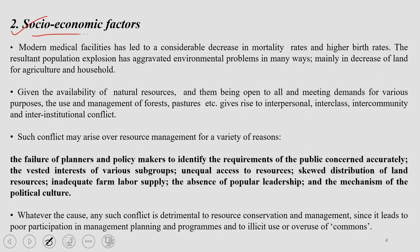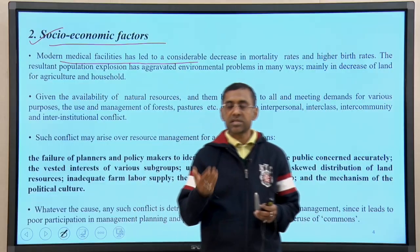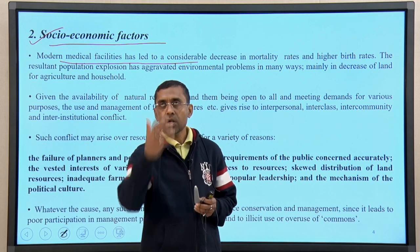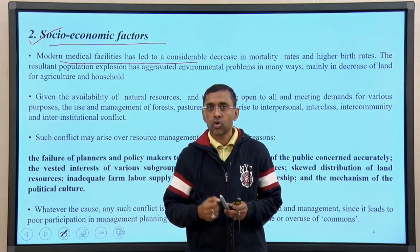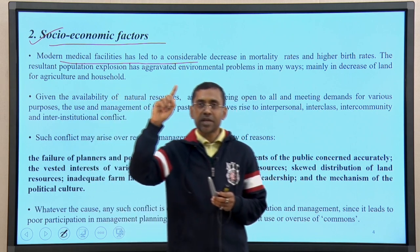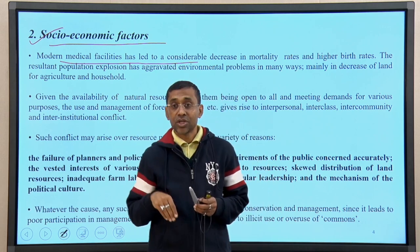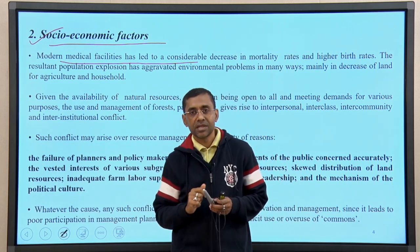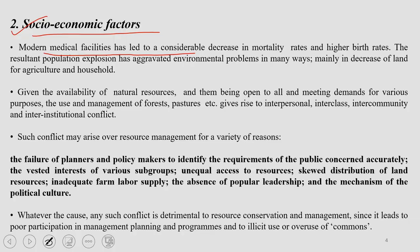Next are socio-economic factors. Modern medical facilities have led to a considerable decrease in mortality rates due to good medicines, medical care, and hospitals, which has brought down the death rate. Recalling the concept of carrying capacity and J-curve and S-curve — when the death rate goes down, even if birth rate remains the same, you will have a larger population, leading to larger utilization of natural resources.